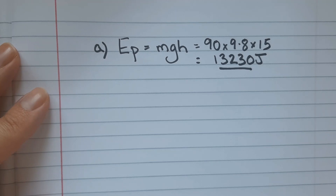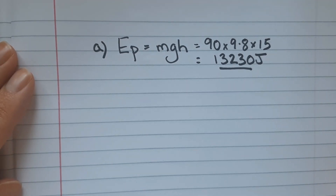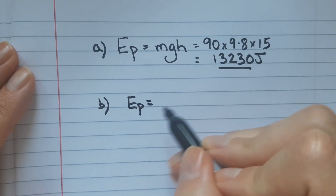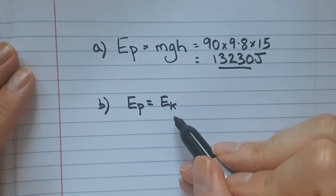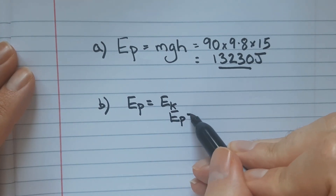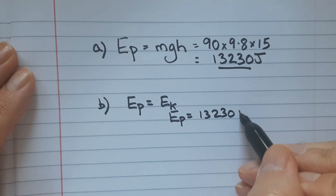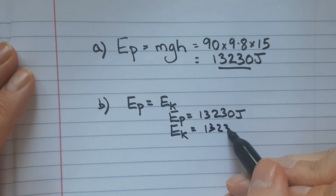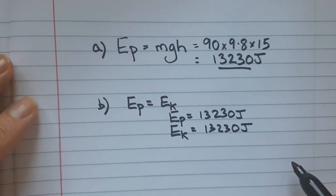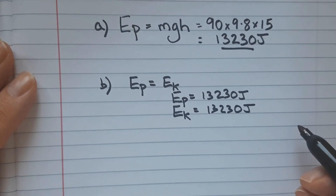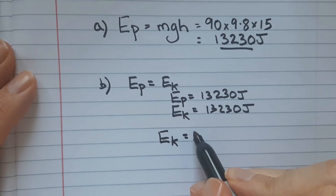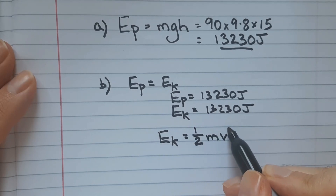For part B, we are asked to find the maximum possible speed that the miner could reach at the bottom of the slide. For this we have to assume that all the gravitational potential energy converts to kinetic energy. So we assume the gravitational potential energy change was 13,230 joules, and all of that energy turned into kinetic energy, meaning the kinetic energy at the bottom is 13,230 joules. We then use the kinetic energy formula: kinetic energy equals half times mass times velocity squared.